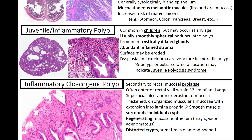There's increased risk of many cancers with Peutz-Jeghers syndrome, such as stomach, colon, pancreas, and breast, and more. Next up, we've got the juvenile or inflammatory polyp. These are common in children but may occur at any age. They're usually smoothly spherical pedunculated polyps with prominently cystically dilated glands with abundant inflamed stroma, and the surface may be eroded. Dysplasia and carcinoma are very rare in sporadic polyps, but can occur.